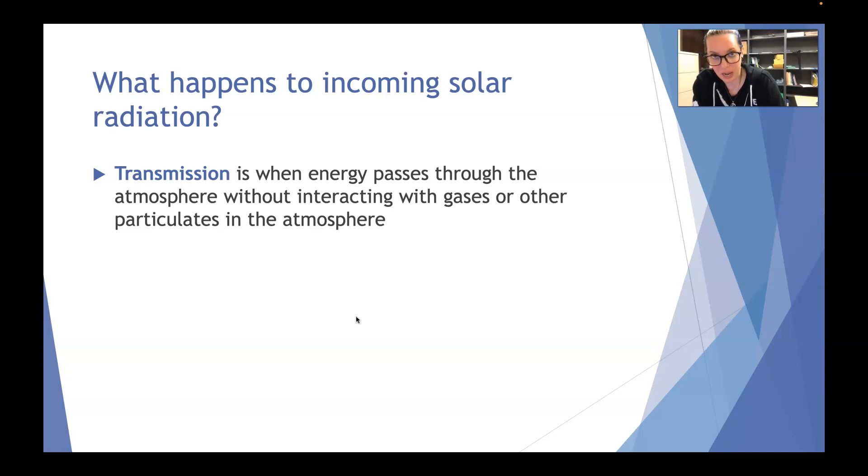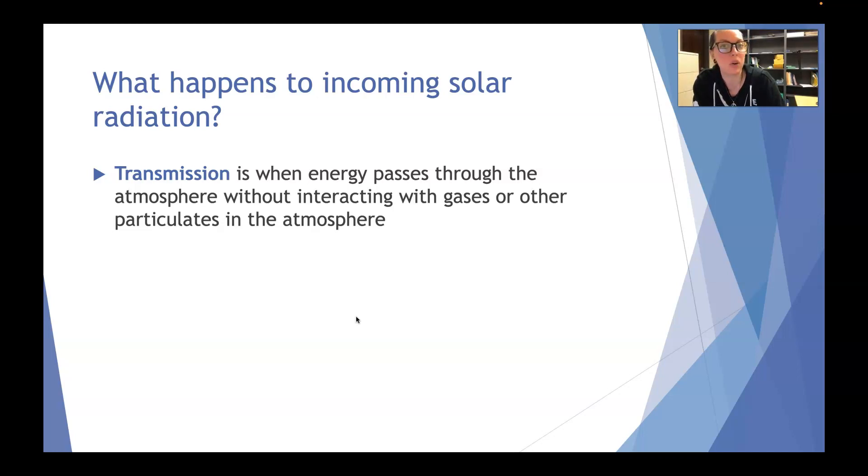Another thing that can happen with incoming or outgoing energy is absorption. And we talked about this a little bit when we talked about ozone, right? How the ozone layer in the stratosphere absorbs solar energy. So the energy that is absorbed by a molecule depends on the wavelength of the radiation and how well that object can absorb.